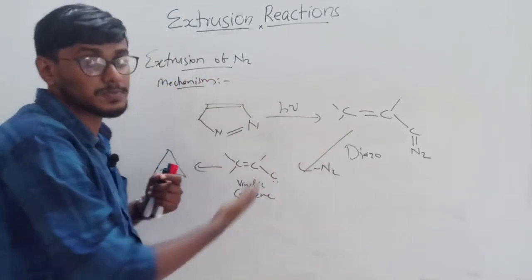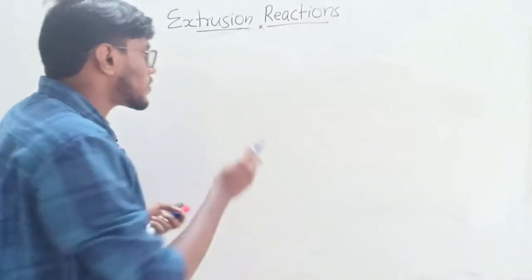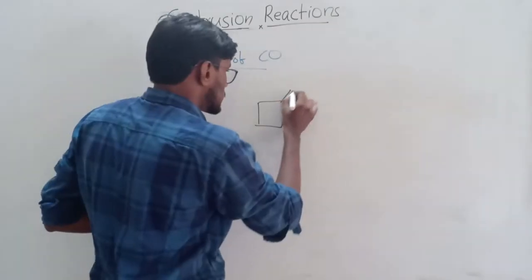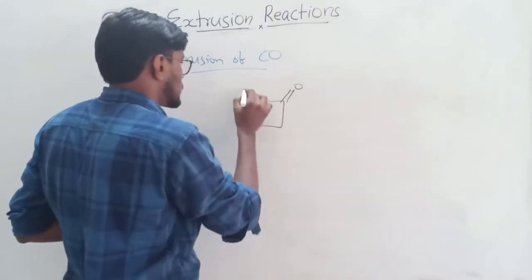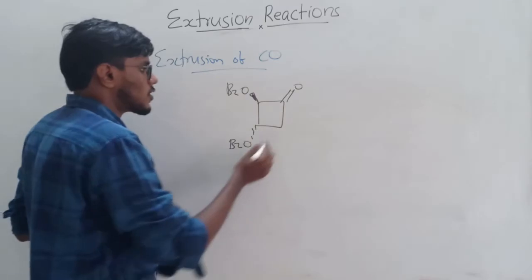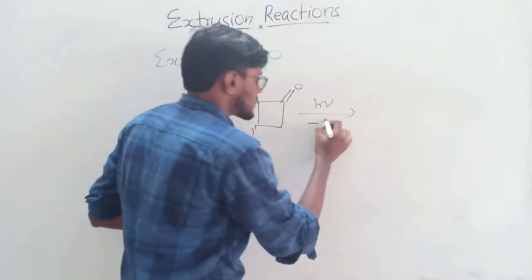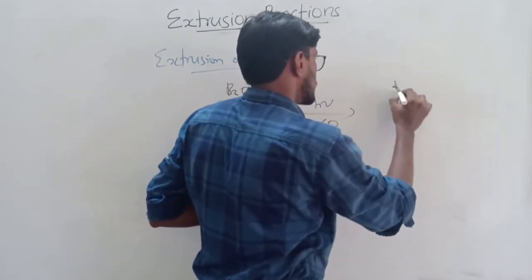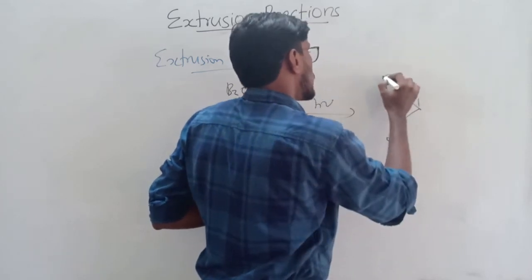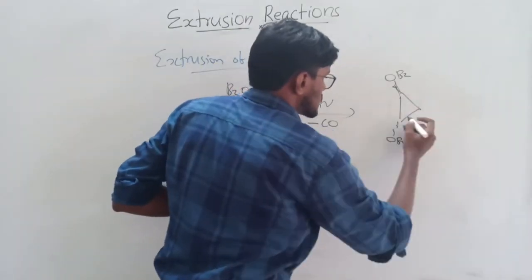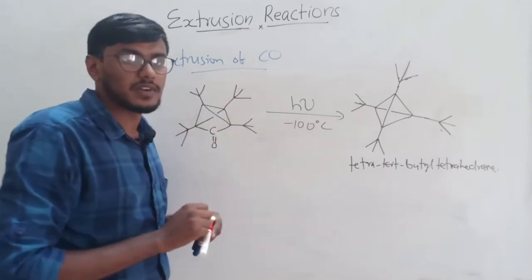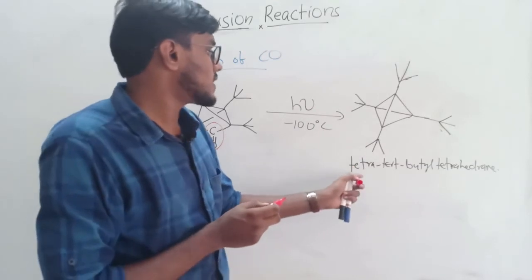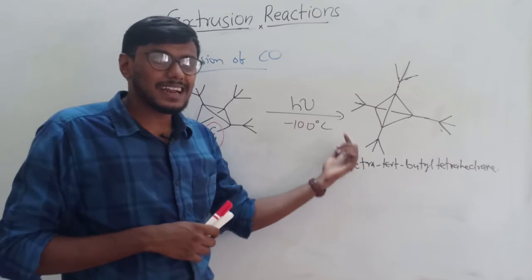Next is the extrusion of carbon monoxide. For example, cyclopentenone on reaction with light eliminates CO and forms the product. Another example is a compound that undergoes extrusion by eliminating carbon monoxide to form tetra-tert-butyl tetrahedrane. This compound undergoes an extrusion reaction and forms the product by extrusion of CO.